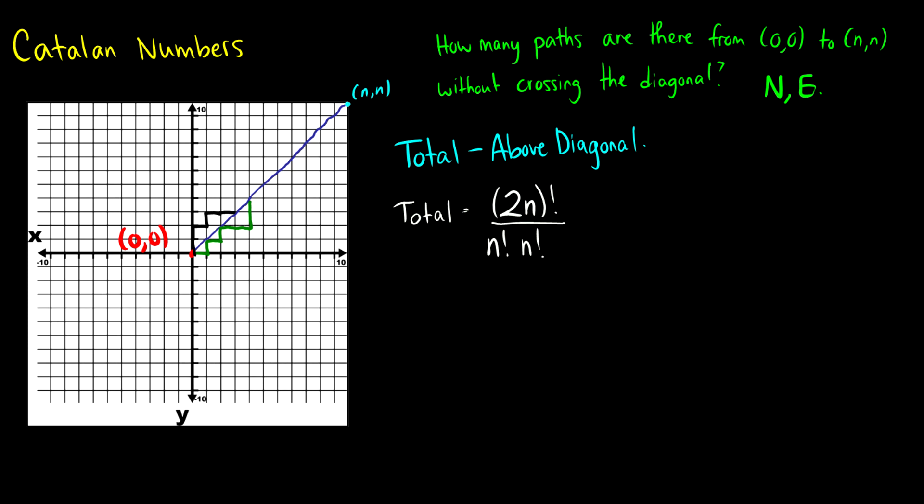So here's a tricky thing that some brilliant man thought of. What if we take a path? So let's take a path that sort of works. Let's go east a bunch, north a bunch, east, north, east. And then we're going to hit the diagonal at this point. And we're going to continue the path. So let's just keep going north, north, east, north, north, and go all the way over to N, N there.